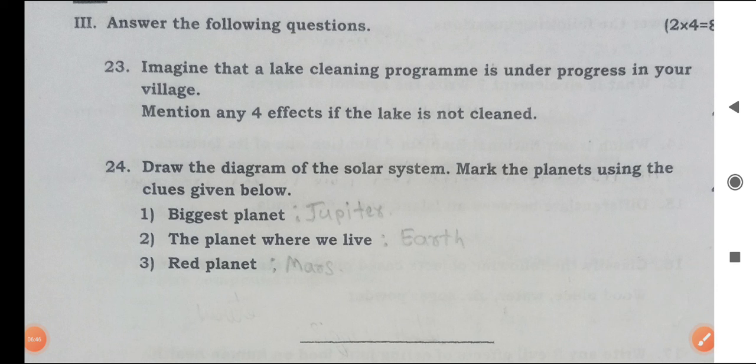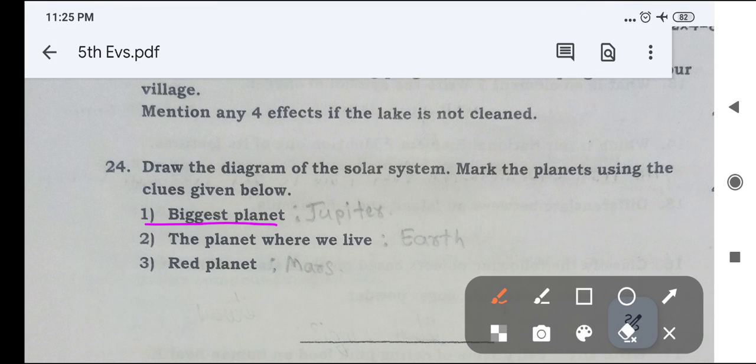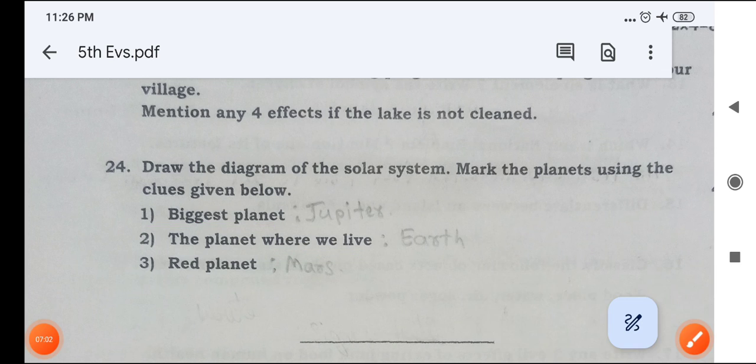Next, draw the diagram of the solar system. Mark the planets using the clues given below. These are clues. Biggest planet is Jupiter. The planet where we live is Earth. Red planet is Mars.